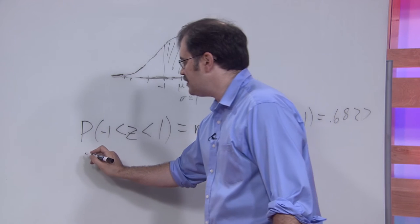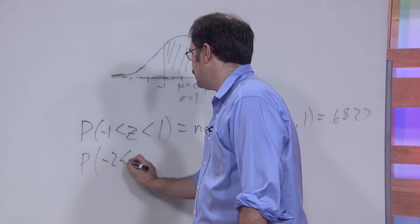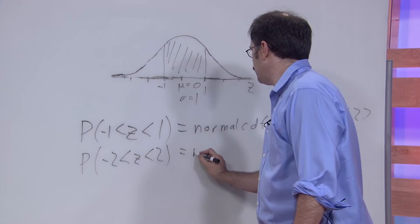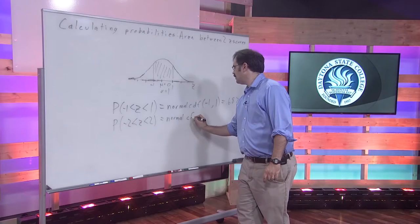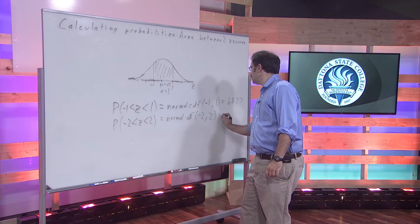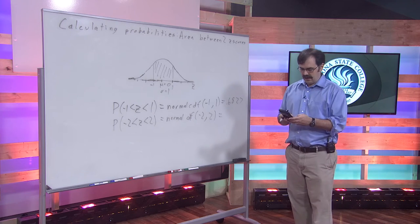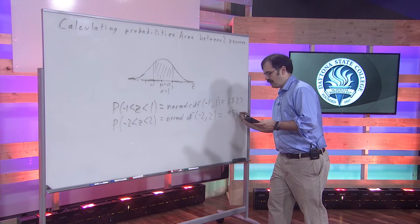And let's just look at three of these real quick. The area between negative two is less than z, which is less than two. Normal CDF negative two comma two. And when you put that into your calculator, you will end up getting .9545.